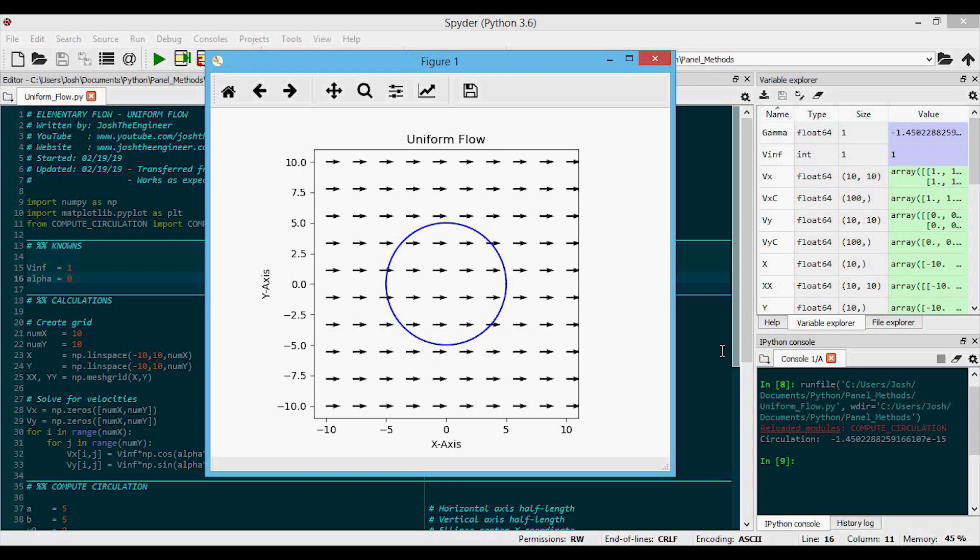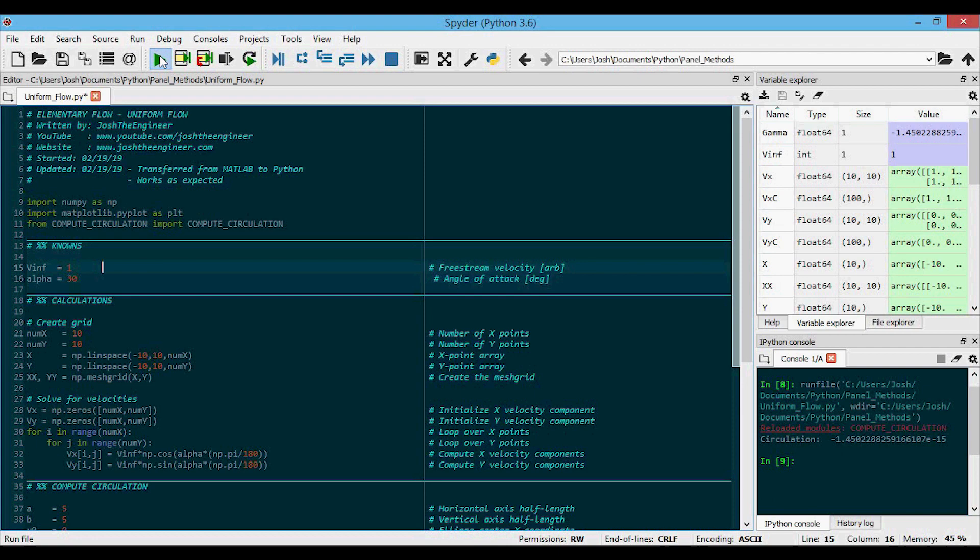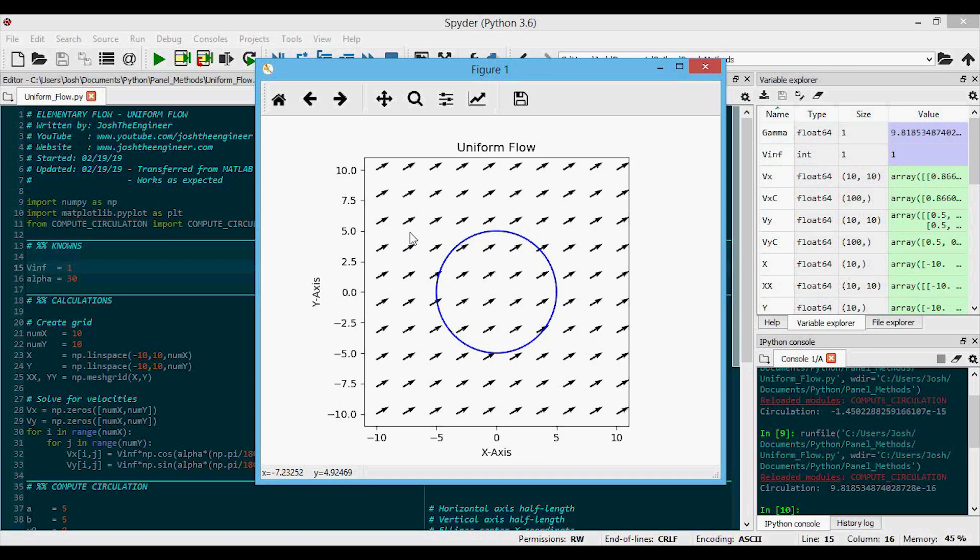And now let's change the angle of attack to something like 30, perhaps, and we'll run it again. And we have a similar plot, but now we can see that the velocity vectors are pointing up and to the right at 30 degrees from the horizontal. And again down here, we get that the circulation is essentially equal to zero, as we would expect.